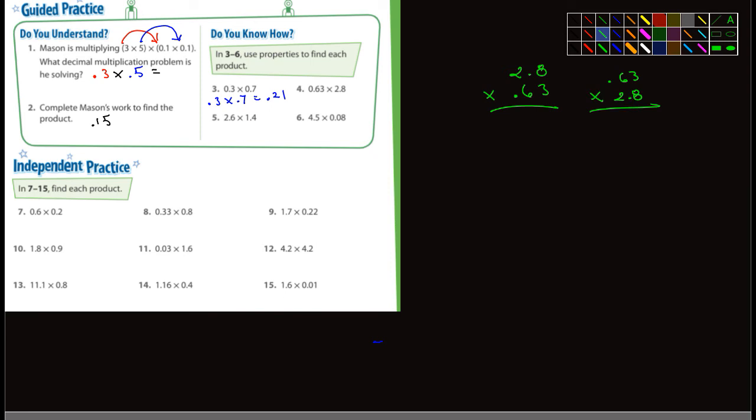So 3 times 8 is 24. Put down the 4, carry the 2. 3 times 2 is 6, plus 2 more is 8. Put a placeholder 0. 6 times 8 is 48. Put down the 8, carry the 4. 6 times 2 is 12, plus 4 is 16. Now we're just adding them together and go straight down. 4 and 0 is 4. 8 and 8 is 16. Put down the 6, carry the 1. 6 plus 1 is 7. 1 comes straight down.